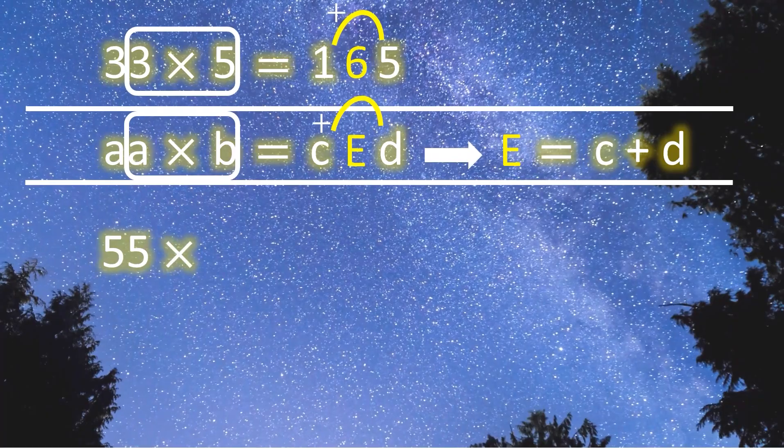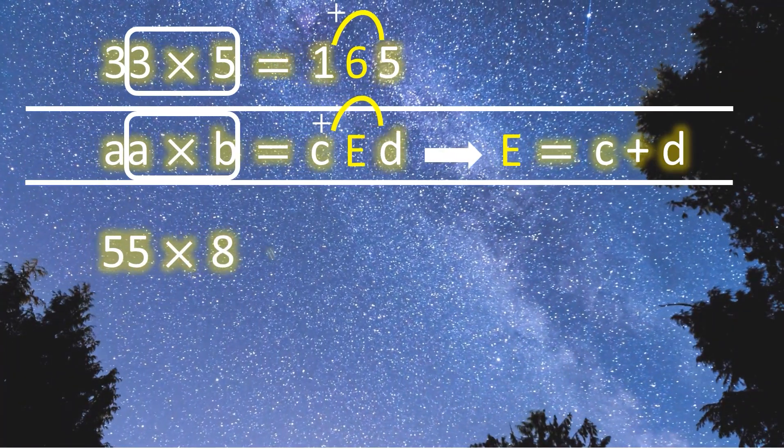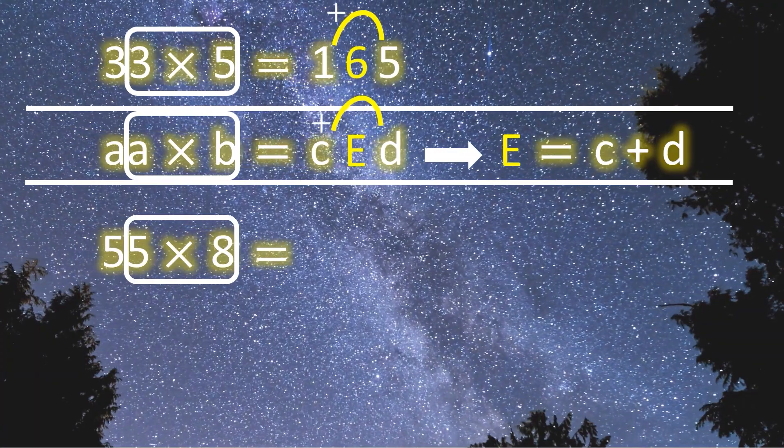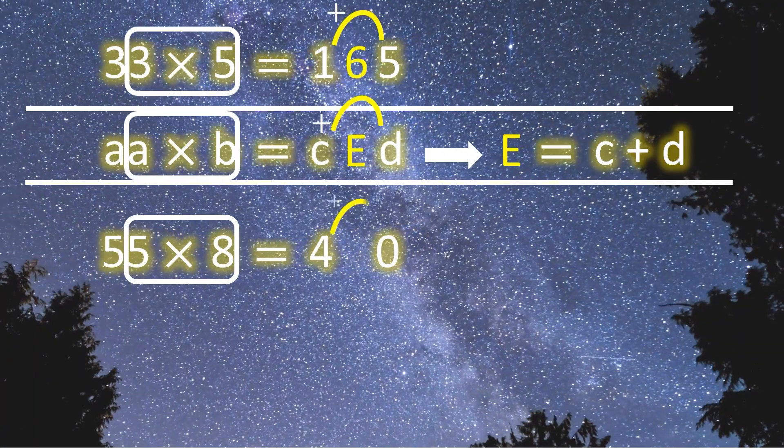Let's try an example. 55 times 8. Okay, 5 times 8 equals 40. We take sum of 4 and 0, then place them between the 4 and 0.